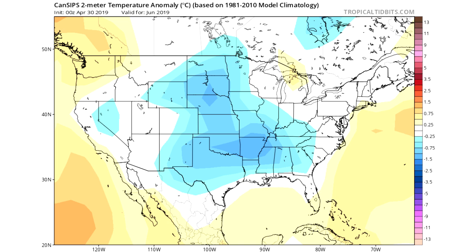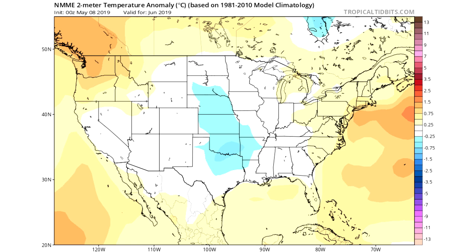Here's the NMME model — I don't really know exactly what this model is, but it's one of the seasonal models on tropical tidbits.com. It's calling for similar conditions as well: cold in the central United States, and this one looks really close to my forecast actually. If only there was some warm there for California it would look exactly like my forecast. You can see up against the east coast there's warmer conditions, but over the central United States it's calling for slightly colder than average.